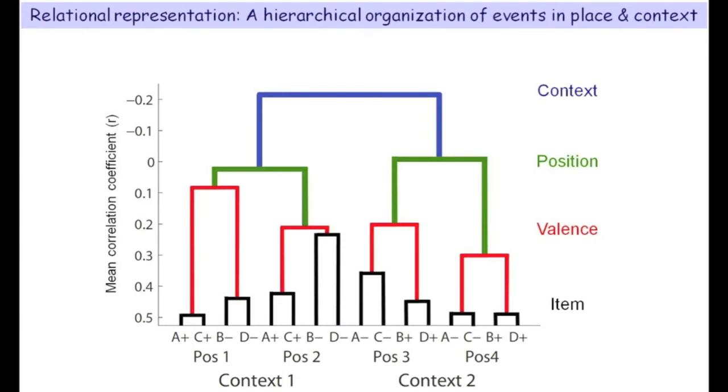This coding hierarchy can be visualized using a dendrogram. Trials of the same items were coded most similarly, followed by trials of the same valence, and then trials that occurred within the same position. Trials in the opposing contexts were coded distinctly from one another.